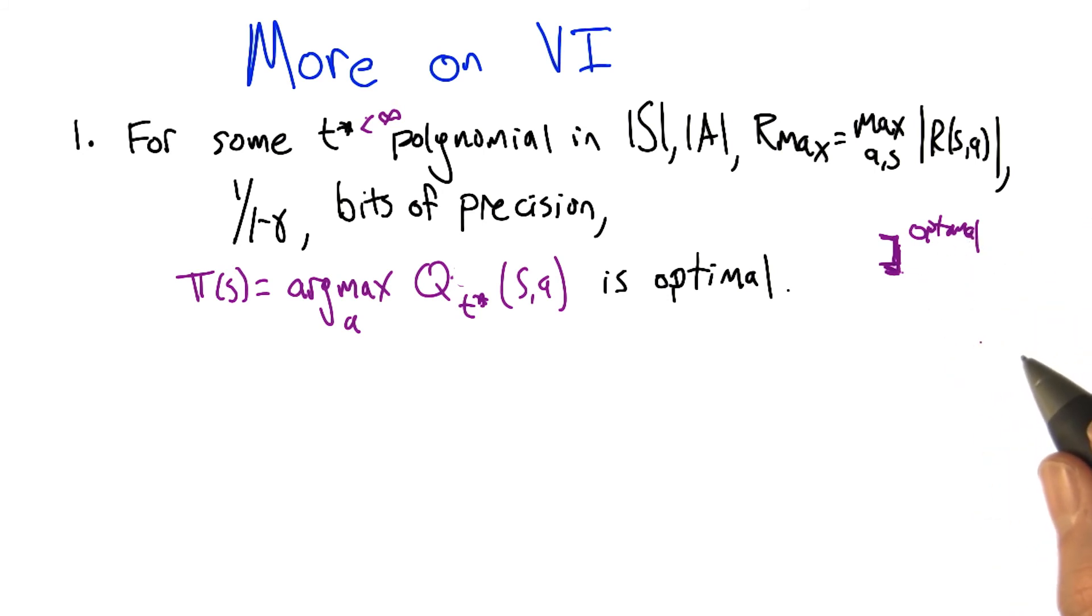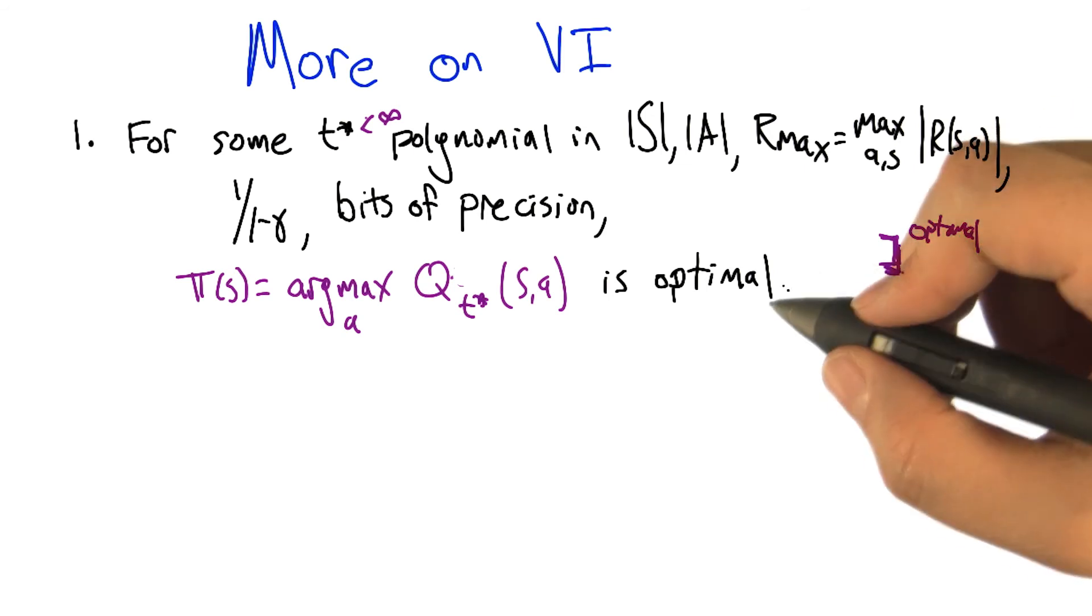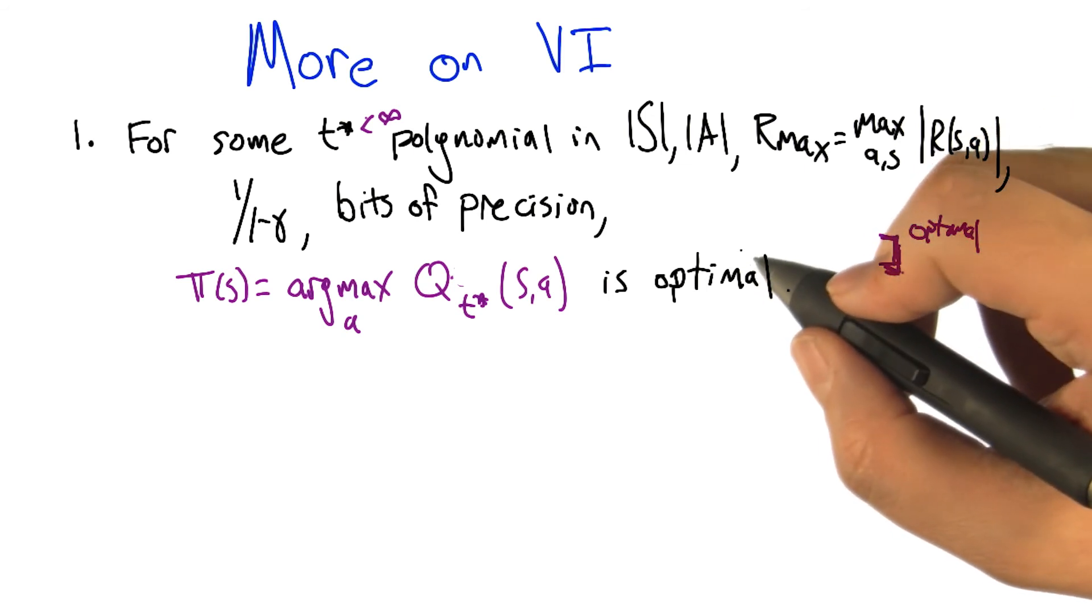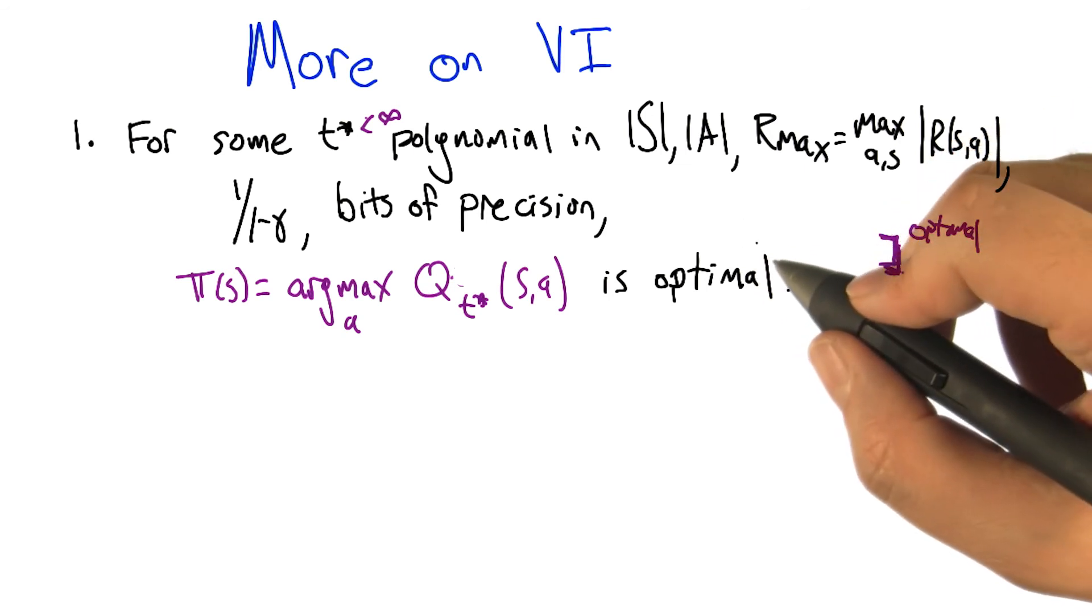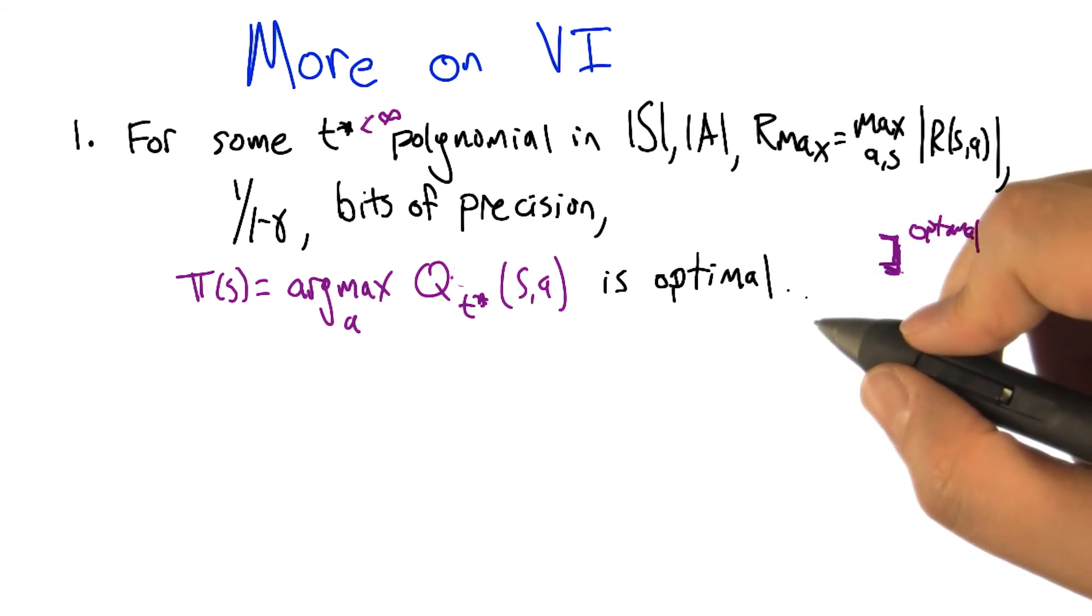So VI converges in a reasonable amount of time. Well, it's not that it converges in a reasonable amount of time - the greedy policy with respect to the value iteration converges in kind of a reasonable amount of time. Okay, that's a much better way of saying it.